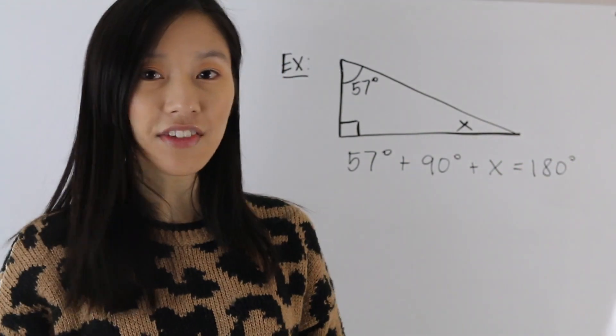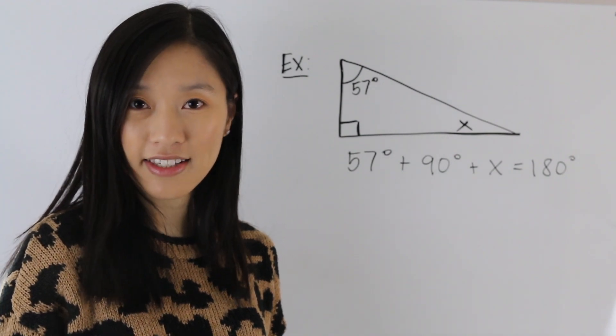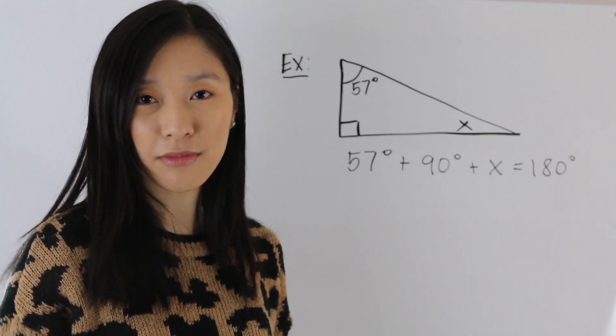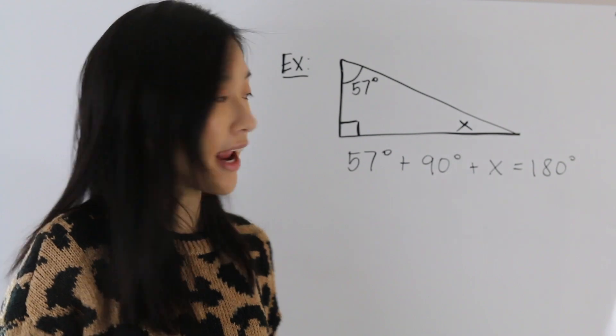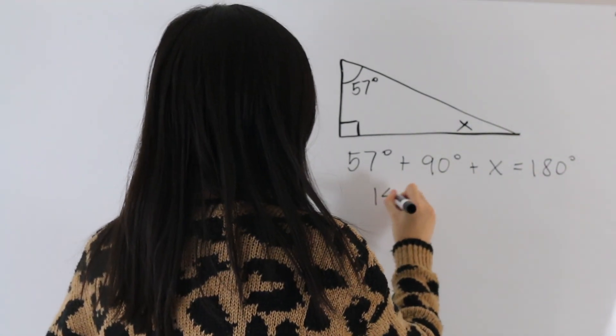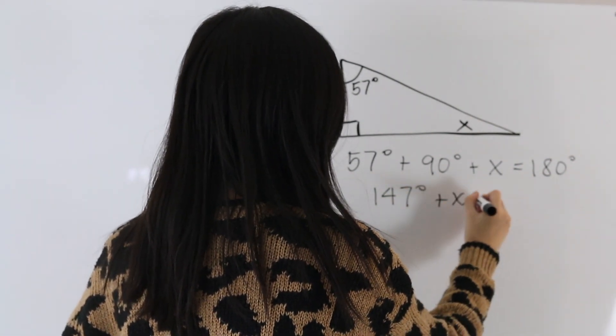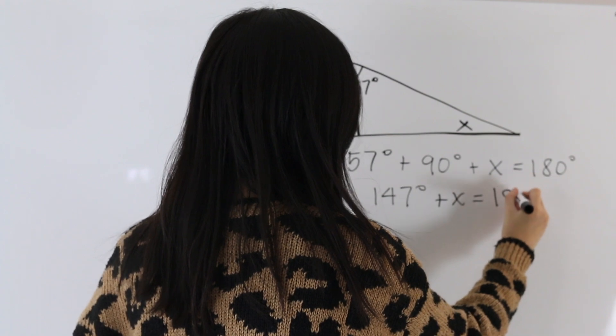So we get 57 degrees plus 90 degrees plus X is equal to 180 degrees. And from here, we're going to want to simplify this expression. And we're going to add these two numbers here, and we are going to get 147 degrees, and then plus X is equal to 180 degrees.